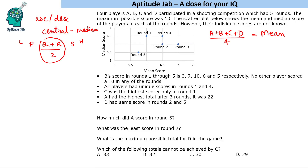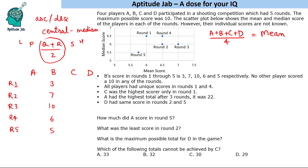Let's set up a table for Rounds 1, 2, 3, 4, and 5 for players A, B, C, and D. One key piece of information: B's scores in the five rounds are 3, 7, 10, 6, and 5 respectively. Also, no other player scored 10 in any of the rounds — so apart from B's score of 10 in round 3, no value we figure out can be 10.